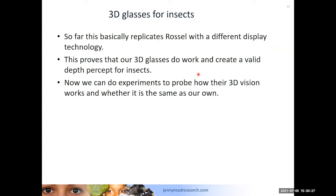A question: did we try a white disc against a grey background? They respond much less to that. The existing literature indicated mantids are much more likely to strike at a dark object on a bright background — like a fly against the sky, which is darker than the background. So we've mainly concentrated on objects that are either camouflaged against the background or darker than it.